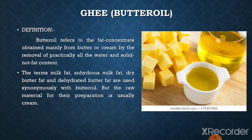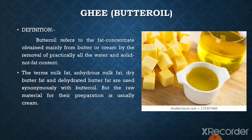Starting with ghee, it is also called butter oil. Conversion of butter or cream into butter oil is a convenient method for the preservation of fat in the absence of refrigerator storage. Butter oil refers to the fat concentrate obtained mainly from butter or cream by the removal of practically all the water and solids-not-fat content, that is SNF. The terms milk fat, anhydrous milk fat, dry butter fat, and dehydrated butter fat are used synonymously with butter oil, but the raw material for their preparation is usually cream.